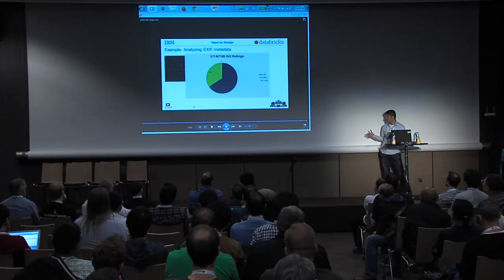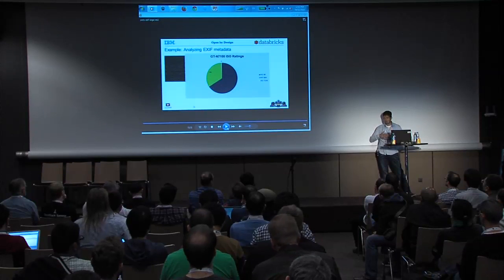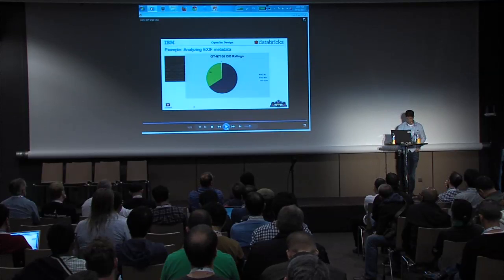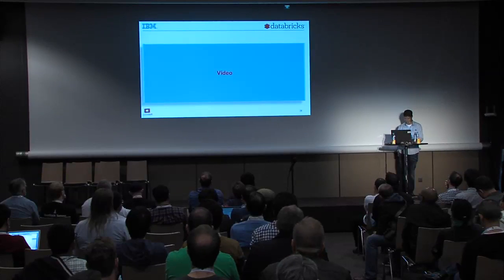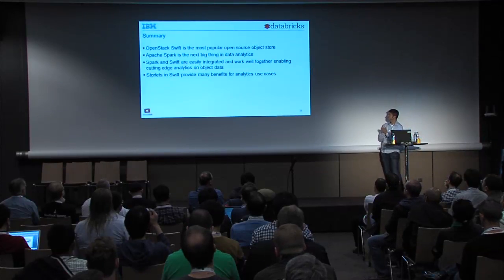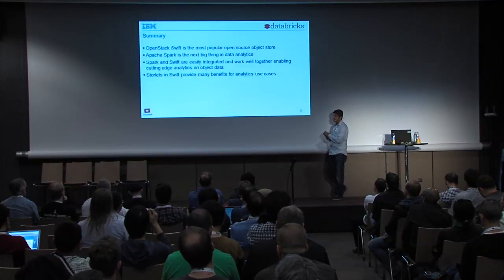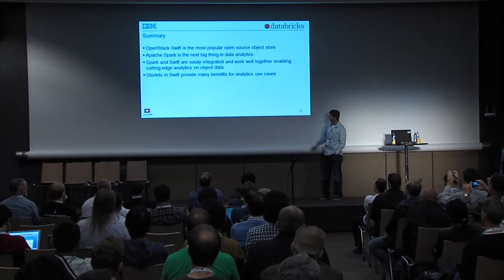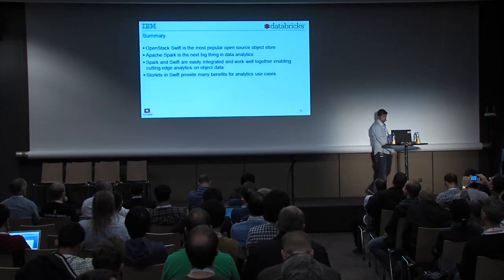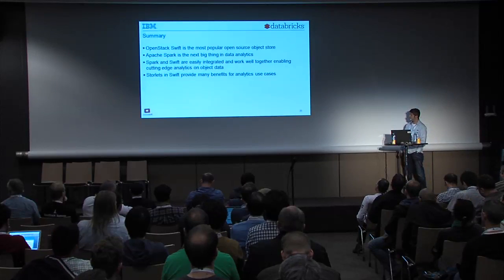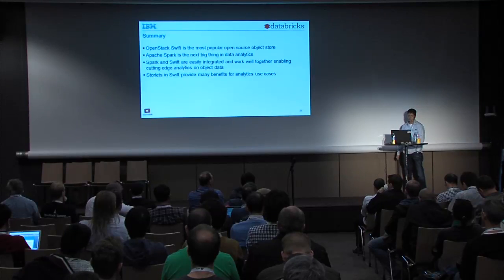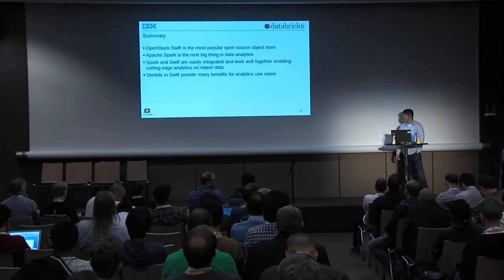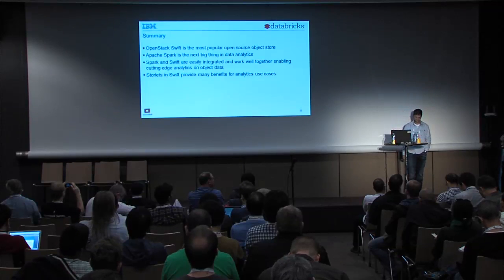The good thing is that we transferred only JSON files — not the full images — to Spark, meaning we can have a very small Spark cluster. Swift is a cheap, reliable object store where you can put your data confidently. Spark is great for analytics. You can integrate them in a simple way, and you can also use advanced features like storelets to transfer much less data over the network and achieve the same analytics in Spark. Thank you.